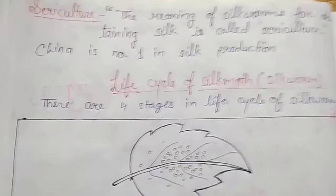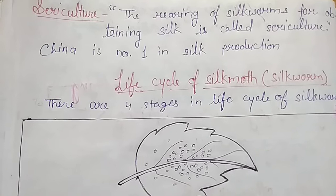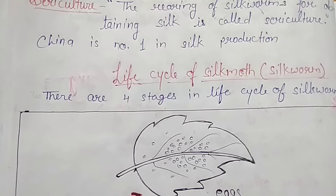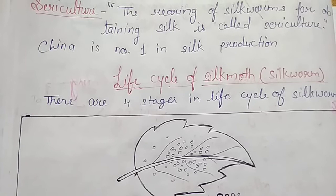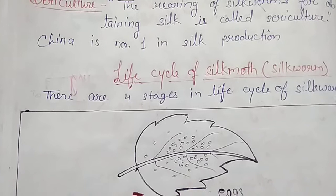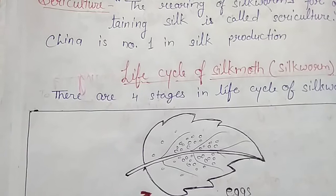Now we will discuss the rearing of silkworms. The rearing of silkworms for obtaining silk is called sericulture. China is number one in silk production; India and Japan also produce silk. Before we discuss the process of obtaining silk, let us study the life cycle of the silk moth.